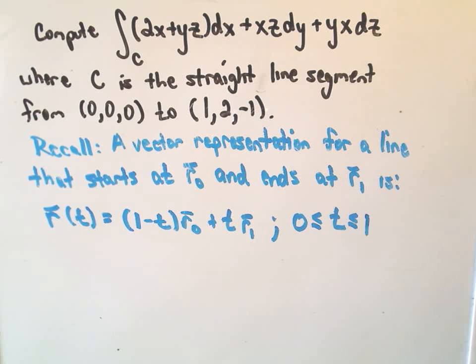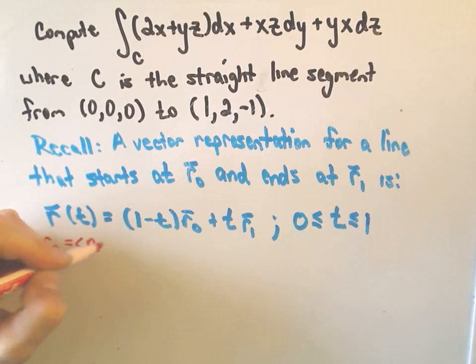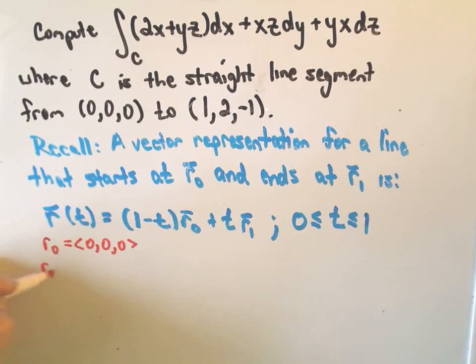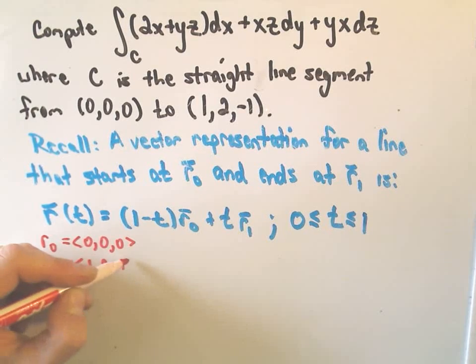Okay, so in our problem, the point we're starting at, 0, 0, 0, so that means our r0 is going to be the point 0, 0, 0. And it says we finish off r1 at the point 1, 2, negative 1.